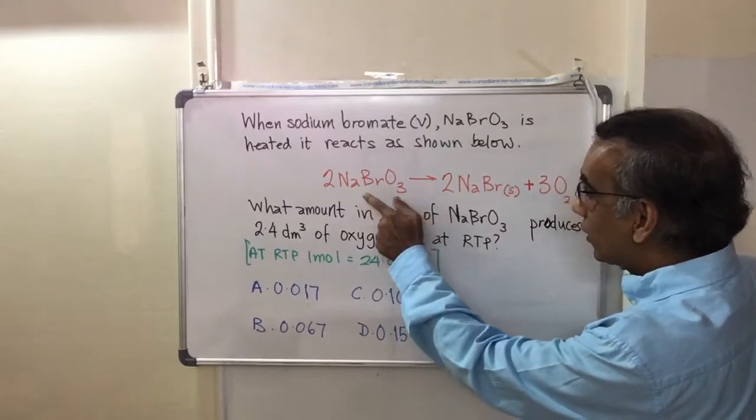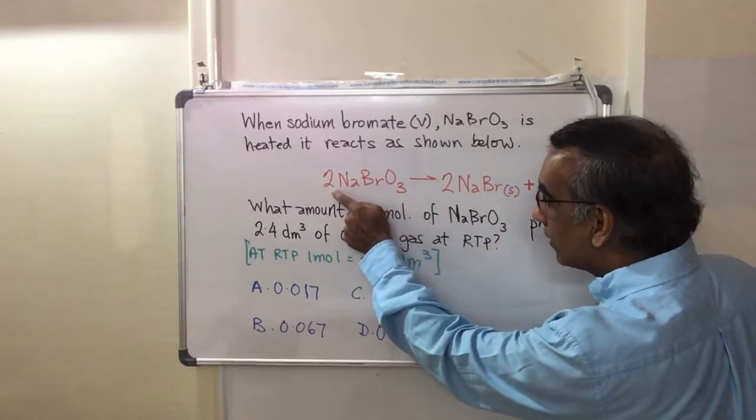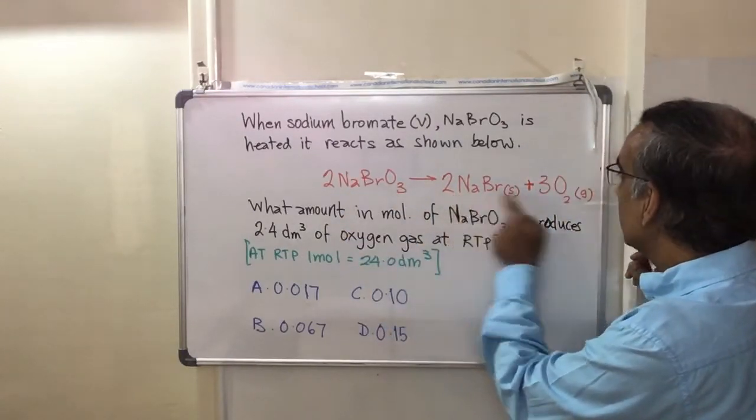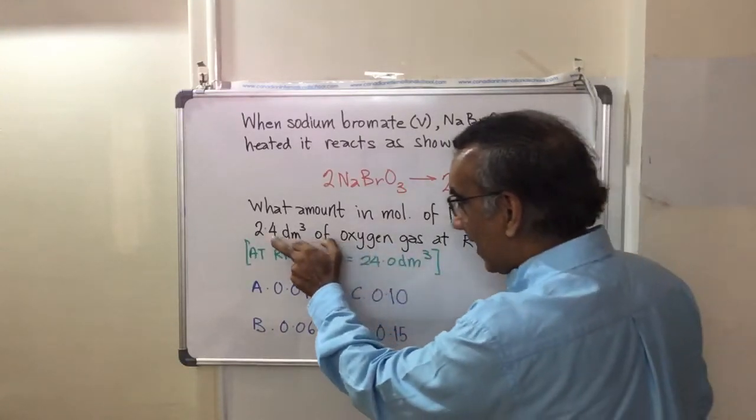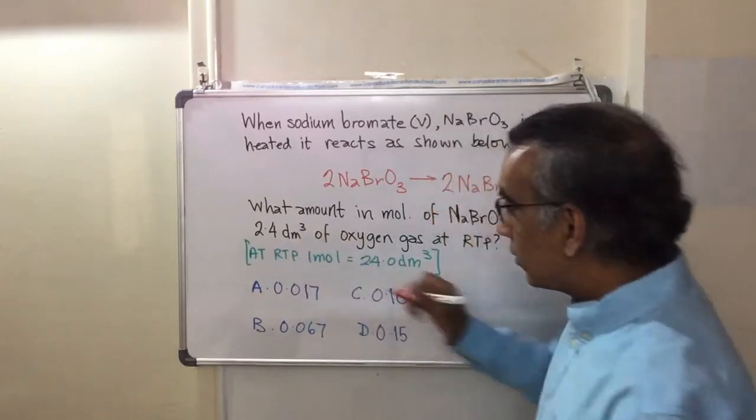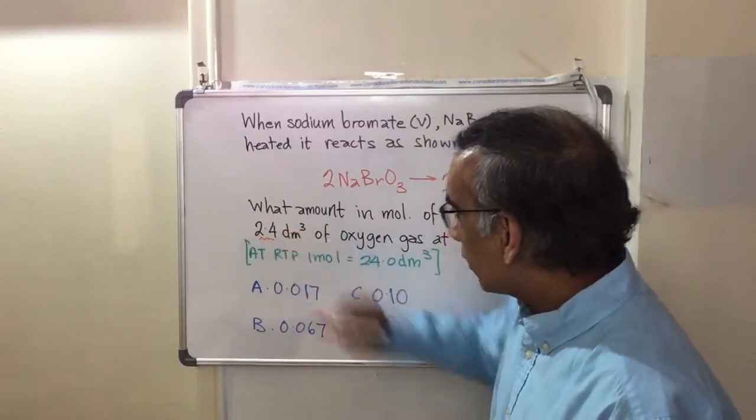Looking here at the question, you see that 2 moles gives 2 moles and 3 moles. So, if this is the actual amount of gas produced, 2.4 dm cubed...